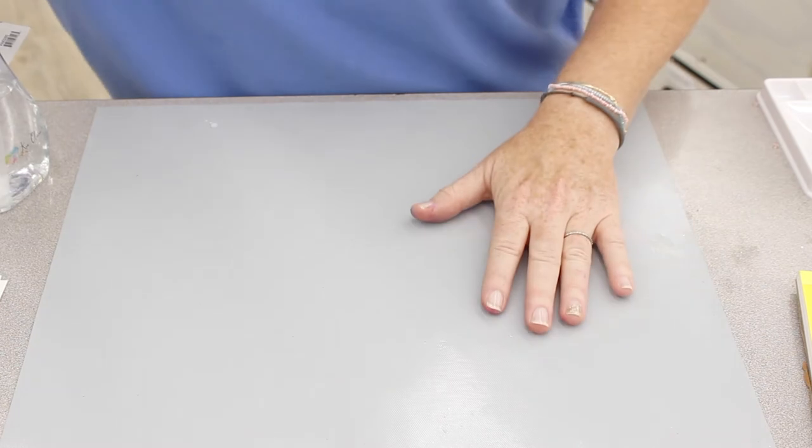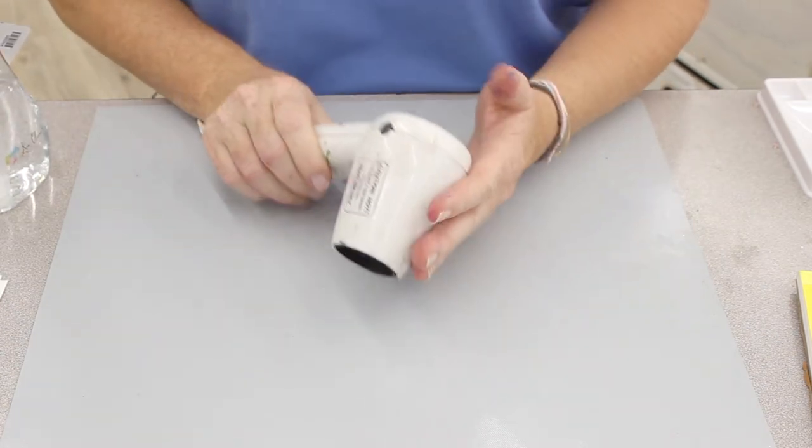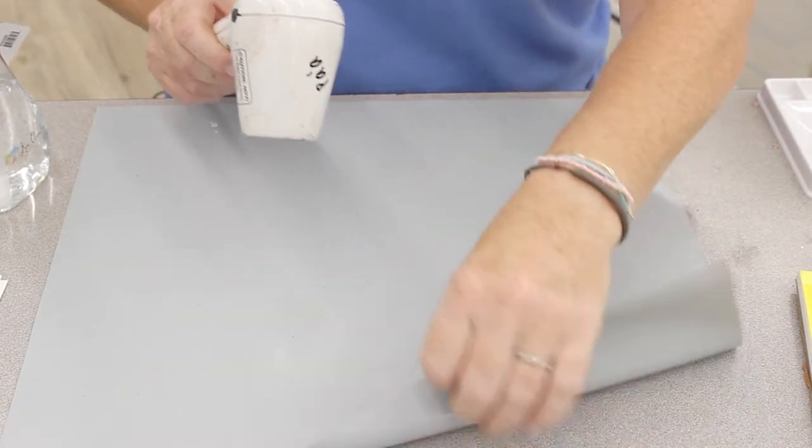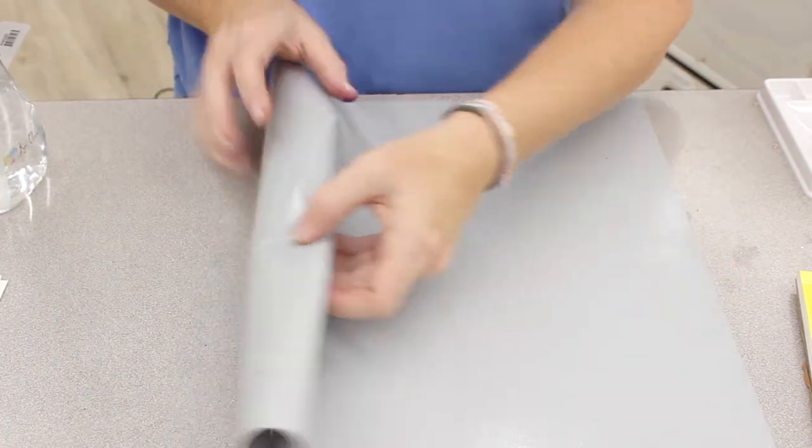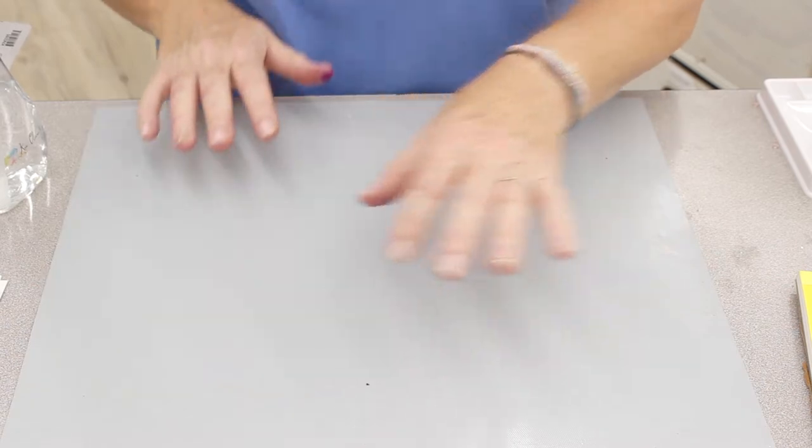It is heat resistant so when you use your heat gun you don't have to worry about it burning or warping your mat. It will always lay flat too even if you roll it up and stored it rolled up.